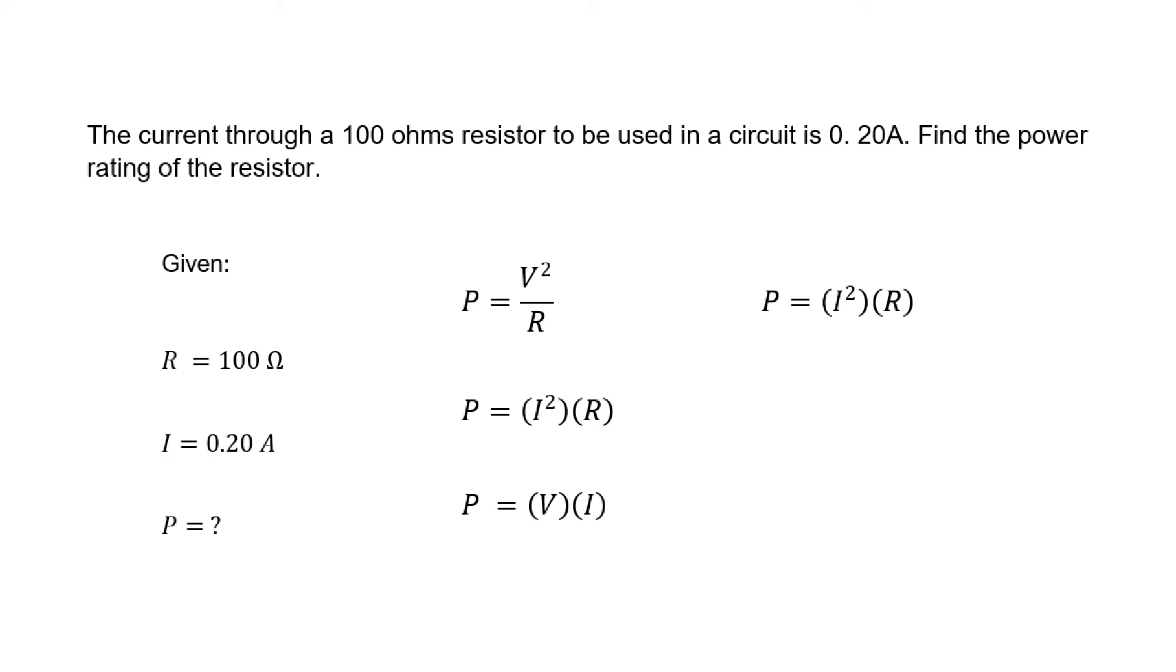To solve this problem, let us substitute the values to our formula. Power P is equal to 0.20 amperes squared, times 100 ohms.